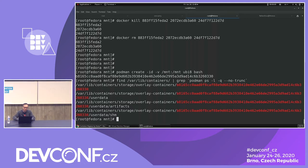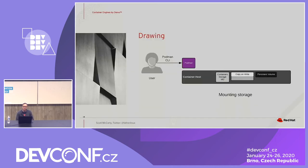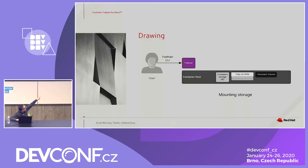Podman has a really cool feature — we can construct this container little by little. We created the metadata representation; now we're going to cause the copy-on-write layer to come into existence. This container image is three layers. When I actually mount the storage it adds one more layer on top — that layer is copy-on-write. Every time you write into that writable directory, it compares with all the layers in the container image, and if something's different, it writes a new piece of data on that upper layer.